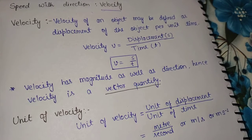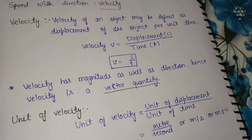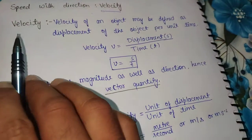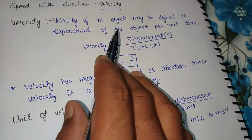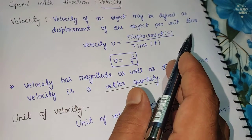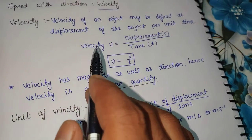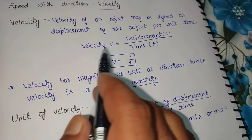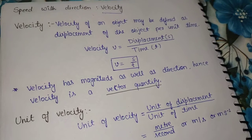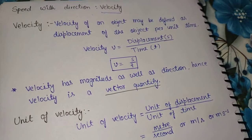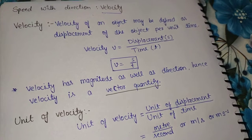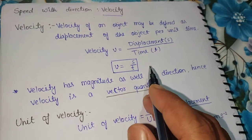Velocity is speed with direction. The definition of velocity is: velocity of an object is defined as displacement of the object per unit time. As speed is defined as distance upon time, in the same way velocity is displacement upon time.